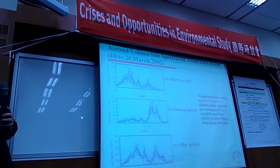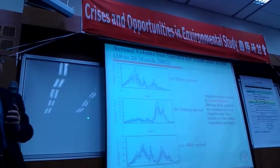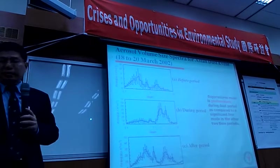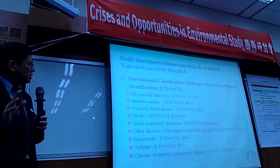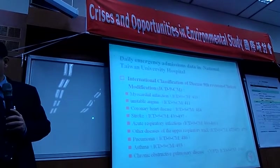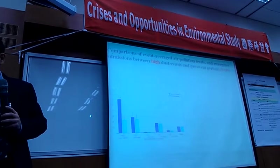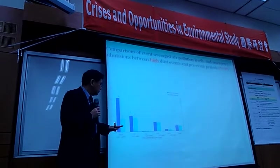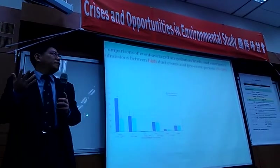We used SuperSite data to see the increase of particles between 1 to 10 micrometers associated with high dust events. Before, during, and after — you can see the size distribution of aerosol particles changes with the dust event. We used the International Classification of Disease to quantify all diseases. For the high dust events, particles show a significant difference while the rest of the pollutants remain the same, so it has to be from the dust.